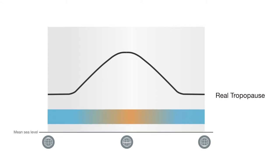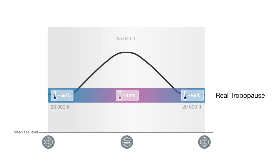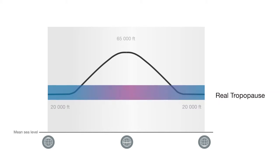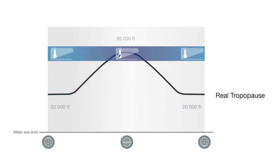The temperature decreases with height up to the tropopause and then becomes relatively constant in the stratosphere. So at the poles, the temperature will reach its minimum at about 20,000 feet at the tropopause and will then be constant up to the altitude of 65,000 feet, whereas at the equator, the temperature continues to decrease up to the higher equatorial tropopause of about 65,000 feet.